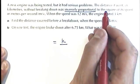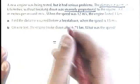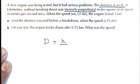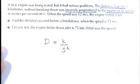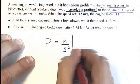What's my first variable? Well, it says the distance it went without breaking down. So let's call that D. And the square of its speed means, I'm going to use the symbol S for speed, and it's squared. So this is my starting point.